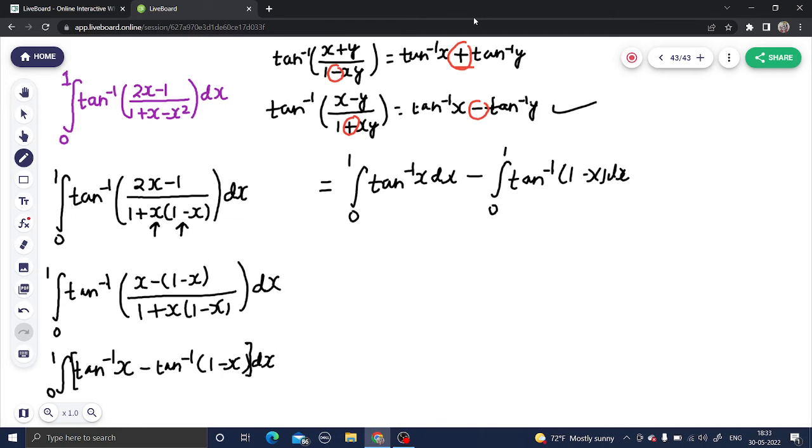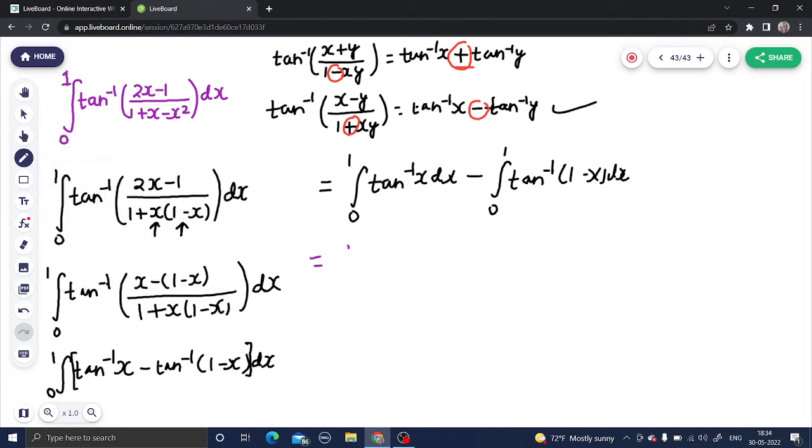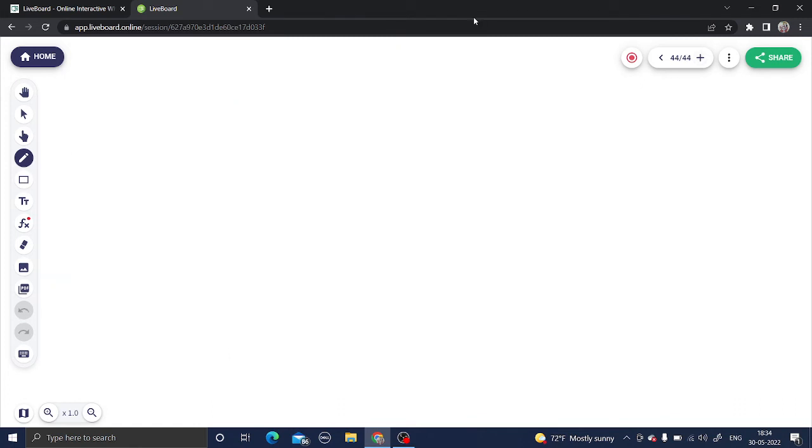Let first integral remain as it is. Coming to the second integral, we know one property that integral 0 to a f dx equals to 0 to a f of a minus x dx. Let us move to the next page for better clarification.